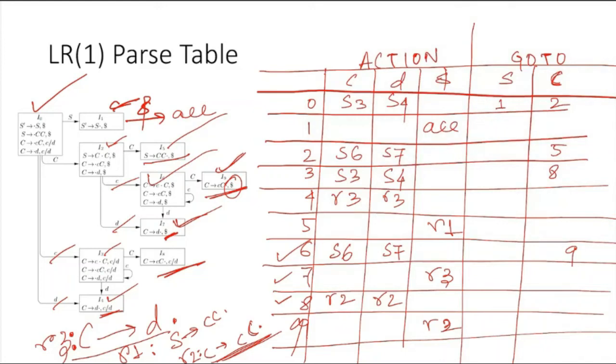You can see here this reduction center, this reduction, this reduction, and this reduction. And from where they are coming—these R3s are coming from S4, this R3 came from S7. So this is one item set, and I4 is here is another item set. As their look-aheads are different, they have created different states.